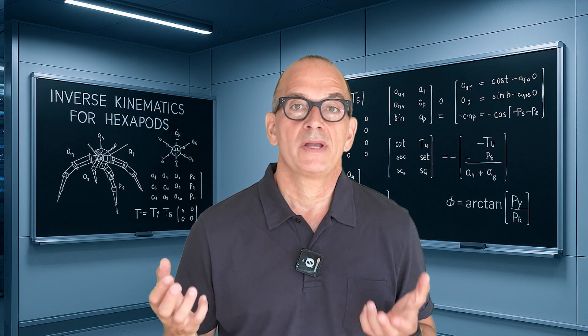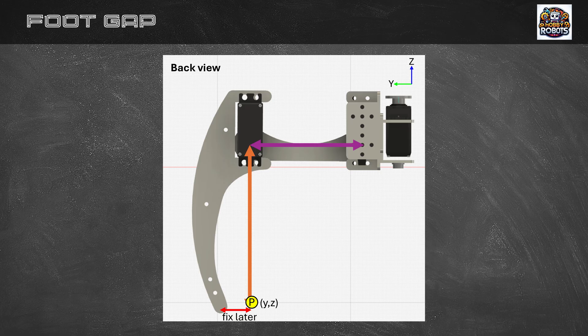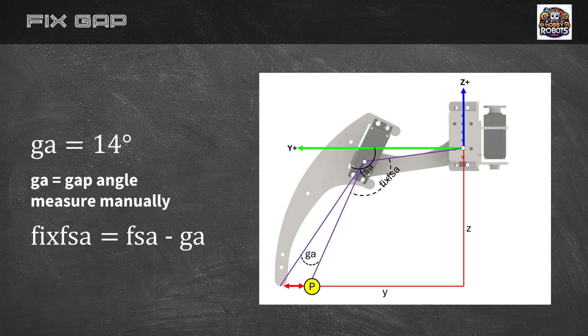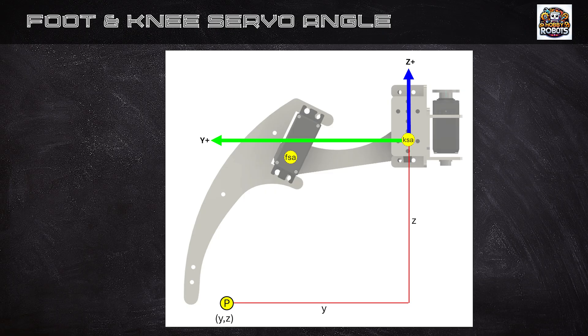As you can see we have an issue that the foot is not directly below the servo. There's a small gap which means our calculated angles are slightly wrong. For my hexapod the error is 14 degrees measured manually and I call this the gap angle or GA. To calculate the correct angle to apply to the servo to make the foot to be placed completely correct we need to subtract this gap from our earlier calculations. Now we have a set of calculations that correctly can identify the foot servo angle and the knee servo angle of a single leg in 2D based on the desired foot position given by coordinates Y and Z.